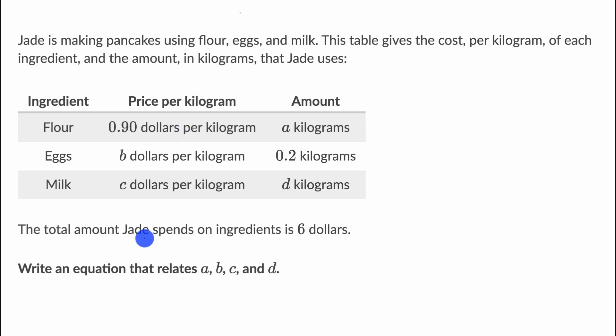So let's see, the total Jade spends, and this is going to be on flour, eggs, and milk, is going to be $6. So one way to think about it is, and I'll do this in different colors, the flour dollars plus the eggs dollars.